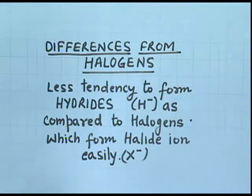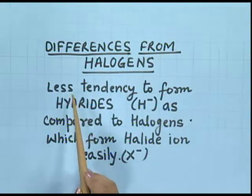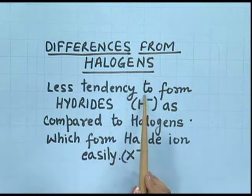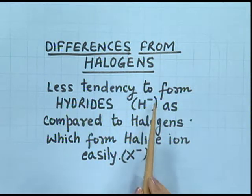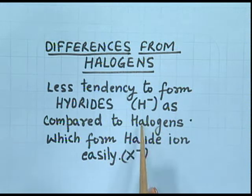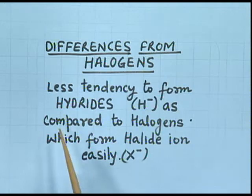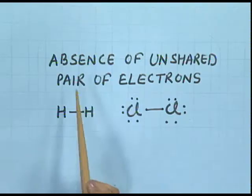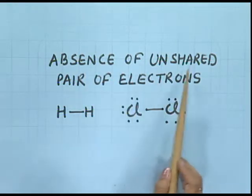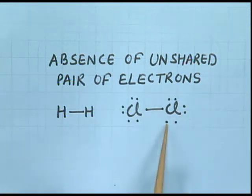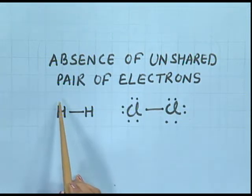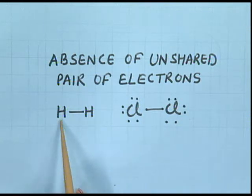However, hydrogen also differs from halogens. It has less tendency to form hydrides (H⁻ ion) as compared to halogens, which form halide ions very easily and readily. Additionally, there is an absence of unshared pairs of electrons on the hydrogen atom, unlike halogens.